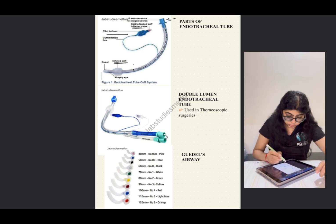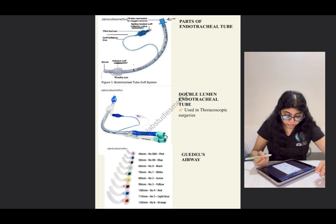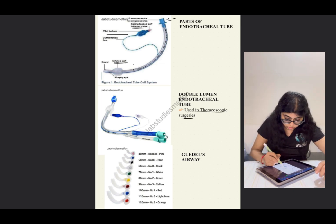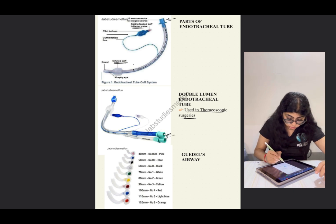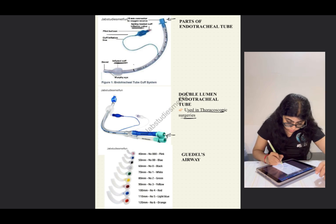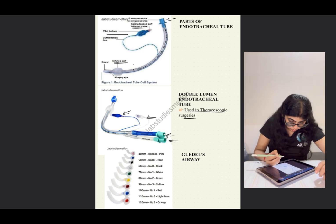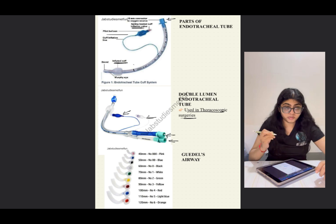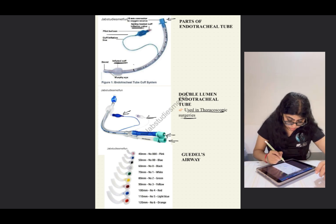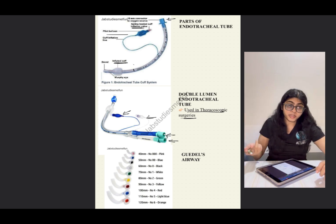There is also a double-lumen endotracheal tube, used in thoracoscopic surgeries. It looks like a regular ET tube but has two of each component — two oxygen source connectors and two cuff inflation lines. Remember it as the double-lumen endotracheal tube.